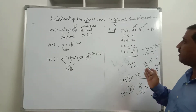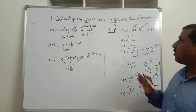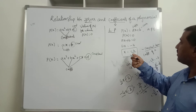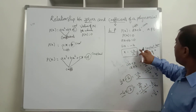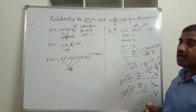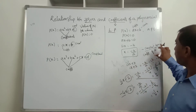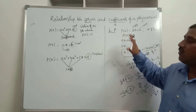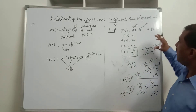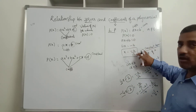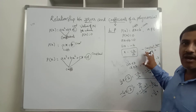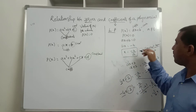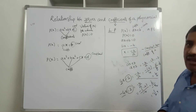Like this we verify the relationship between zeros and coefficients of a linear polynomial. The relationship is: zero of a linear polynomial = minus of constant term divided by coefficient of x, that is x = −b/a from the general form. Did you understand children?